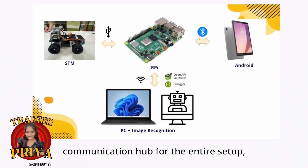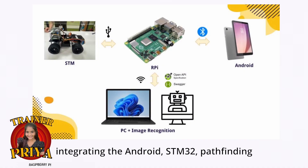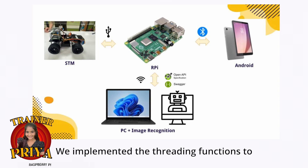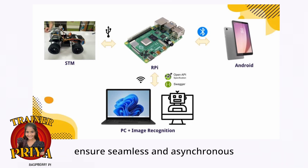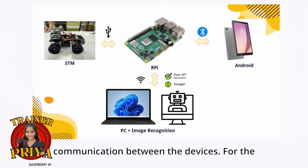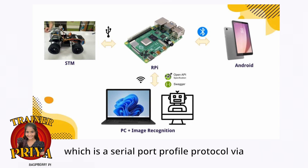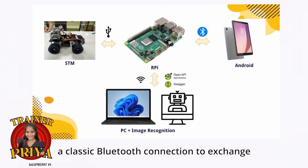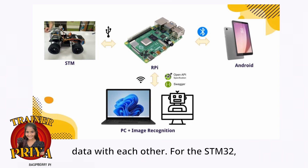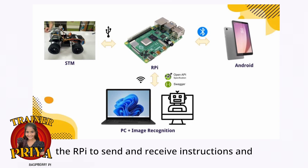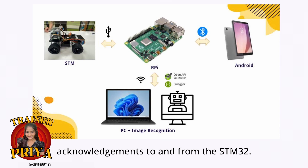The RPI serves as the central communication hub for the entire setup, integrating the Android, STM32, pathfinding, and image recognition algorithms. We implemented threading functions to ensure seamless and asynchronous communication between the devices. For the Android tablet and the RPI, we utilize the SPP — a serial port profile protocol — via a classic Bluetooth connection to exchange data. For the STM32, it employs the virtual COM port through a USB serial connection, enabling the RPI to send and receive instructions and acknowledgements to and from the STM32.